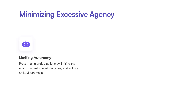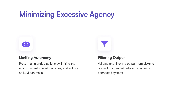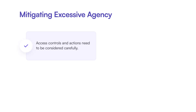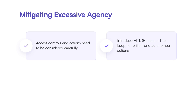Mitigating excessive agency boils down to two main things: limiting the agency or autonomy that an LLM is allowed to have, and validating and filtering the LLM's output to prevent unintended behavior. To limit agency, you should start treating LLMs like users of a system — if you do not want a user to have access to a certain document or perform a certain action, you should not let the LLM do so either. Introducing humans in the loop for critical operations greatly minimizes the risk of LLMs' autonomous behavior.